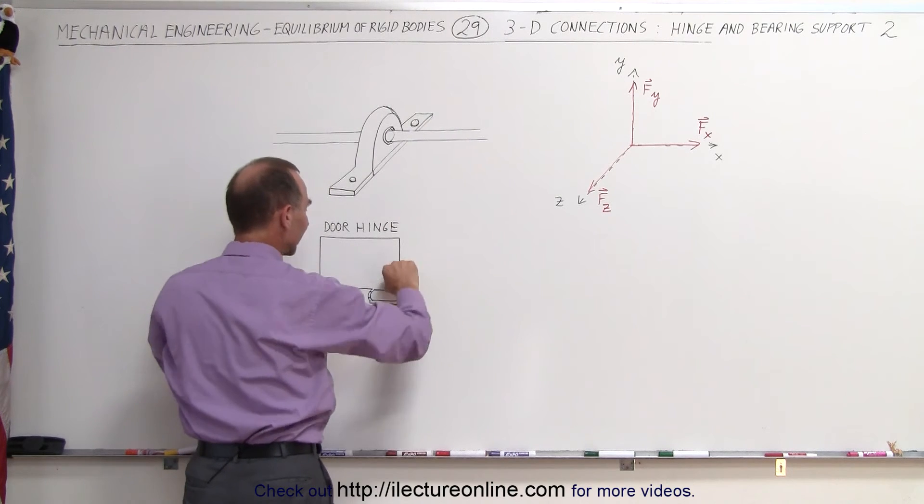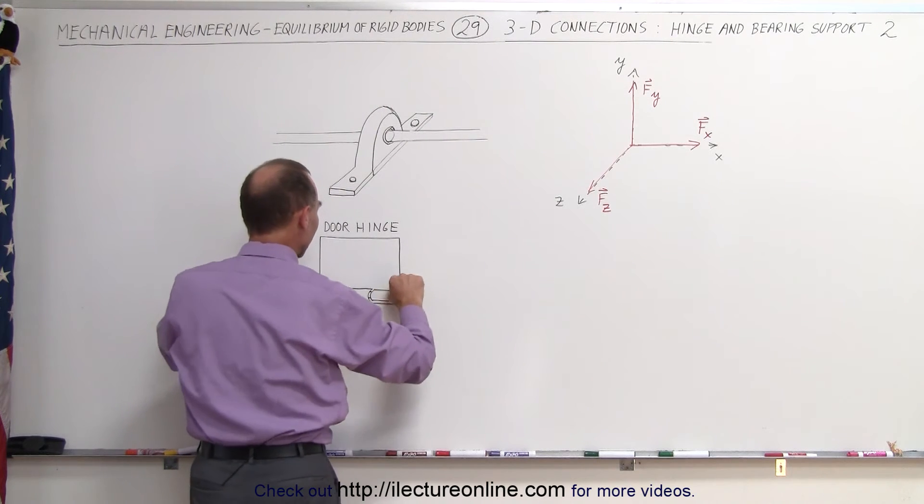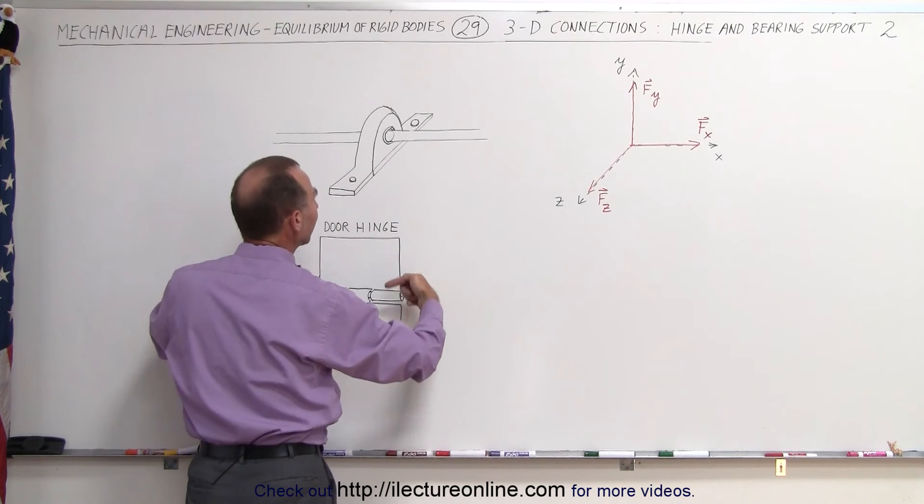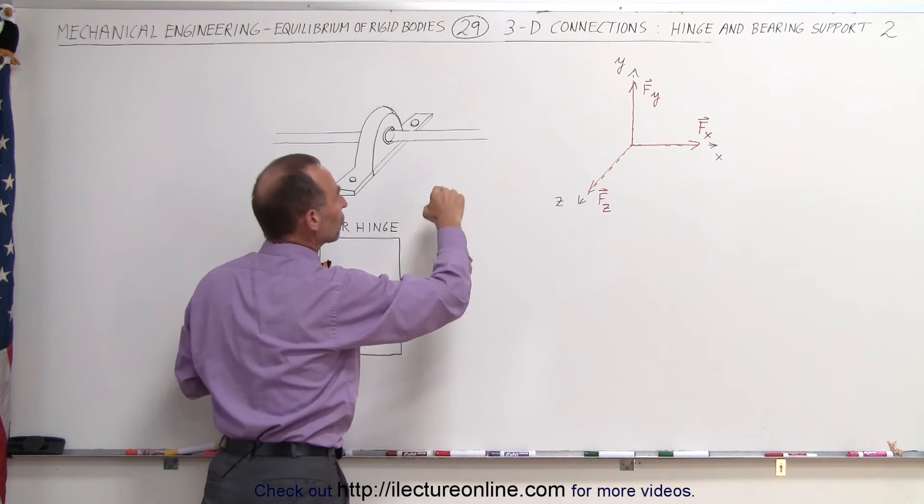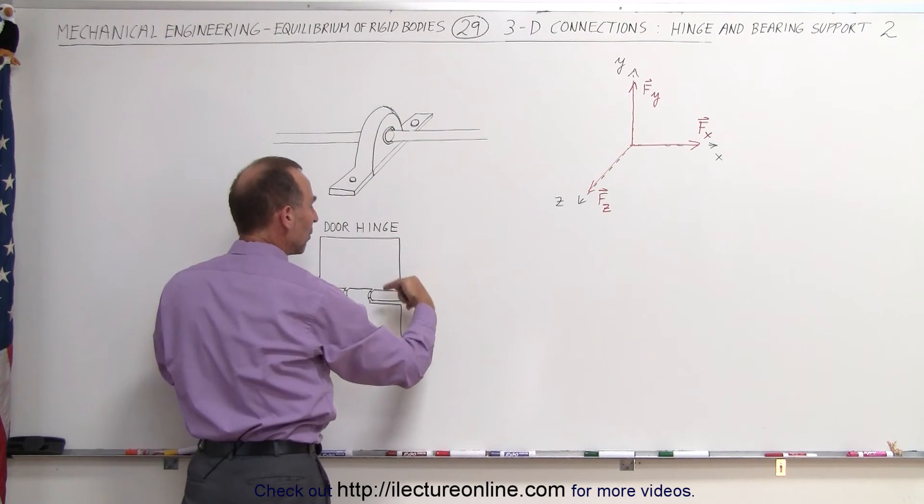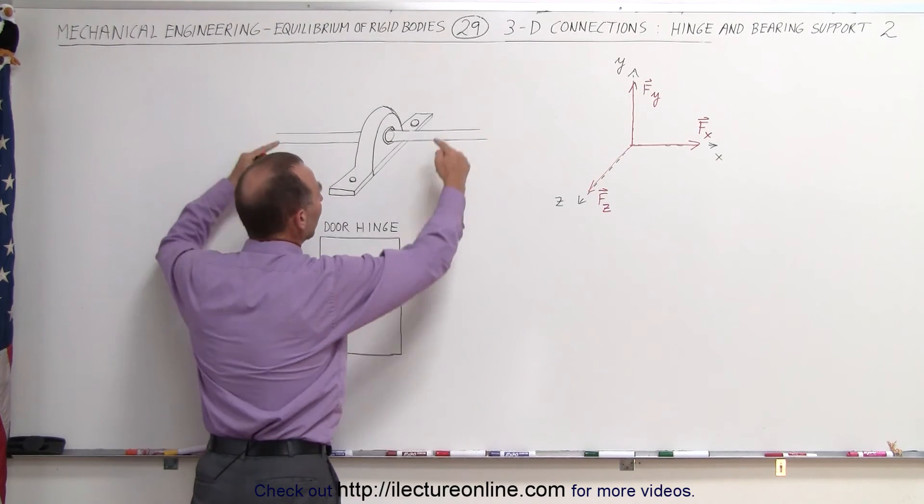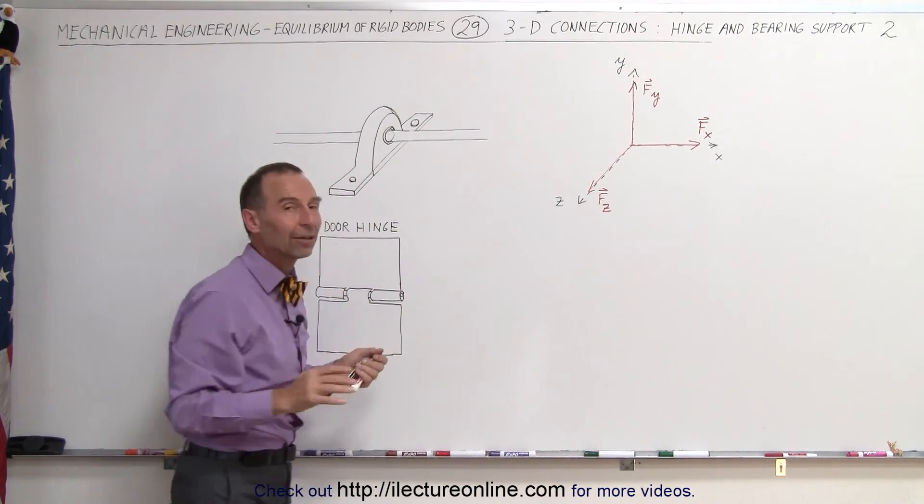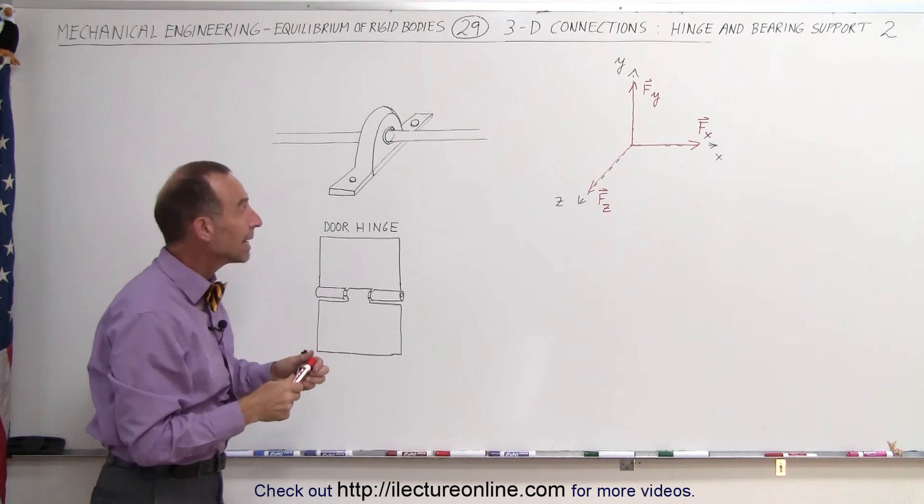Same over here, we cannot move it like this and we cannot move it like that, but it can rotate and so there's no moment in the X direction so both here and here we have the ability for the bottom here to rotate like this, so the shaft to rotate like that so there's no moment created in the X direction.